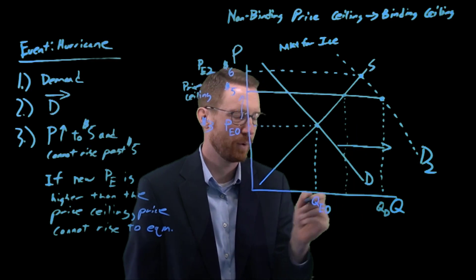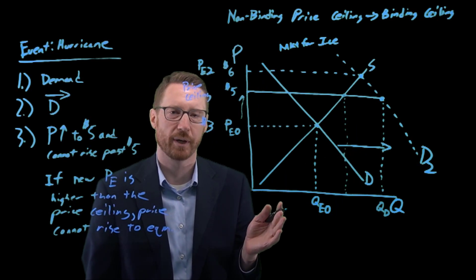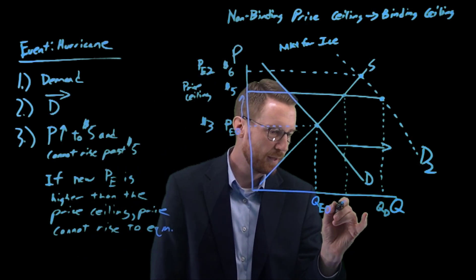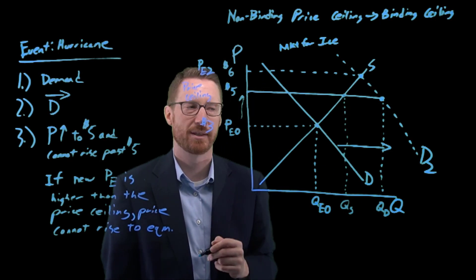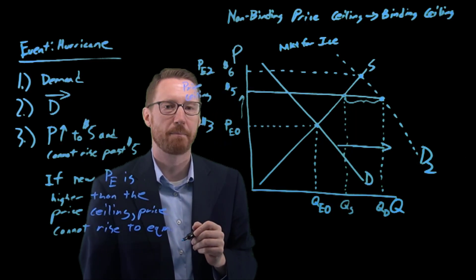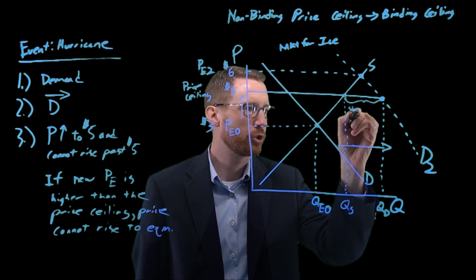But what about sellers? At that five dollar price, we trace it over till it hits the supply curve. How many are they willing to supply? We'll supply some, but we don't want to use all of our generator power to make ice if we can only sell it for five dollars. We've got this quantity supplied that is less than quantity demanded. Our problem when we have this binding price ceiling is now we have a shortage.